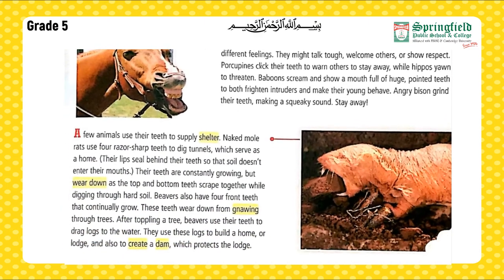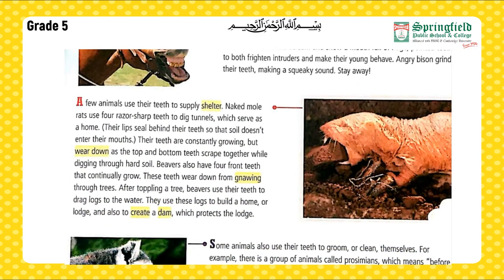A few animals use their teeth to supply shelter. Naked mole rats use four razor-sharp teeth to dig tunnels which serve as a home. Their lips seal behind their teeth so that soil doesn't enter their mouths. Their teeth are constantly growing but wear down as the top and bottom teeth scrape together while digging through hard soil.